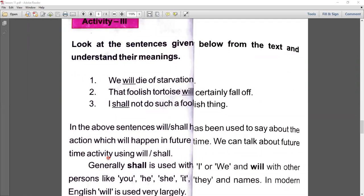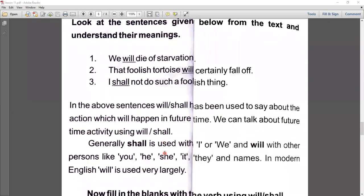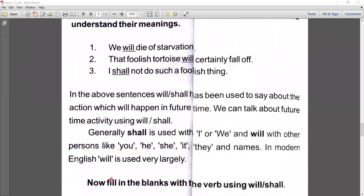We can talk about future time using will or shall. Generally, shall is used with I or we, and will with other persons like you, he, she, it, they, and names. Now in modern English, will is used very largely. So here we don't use shall as much anymore.